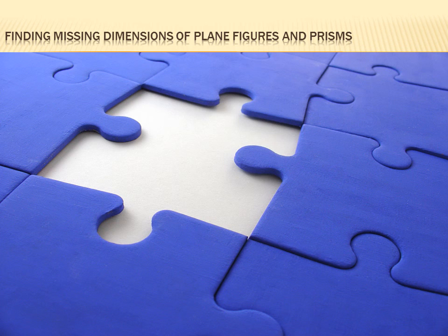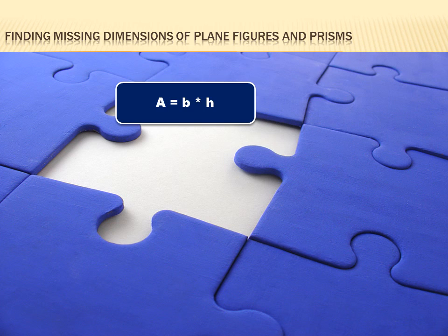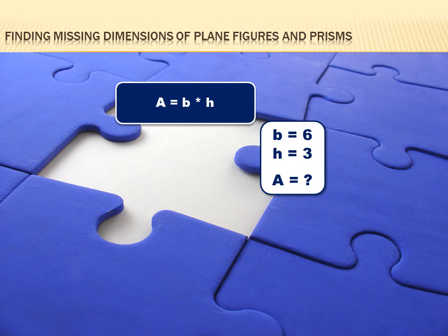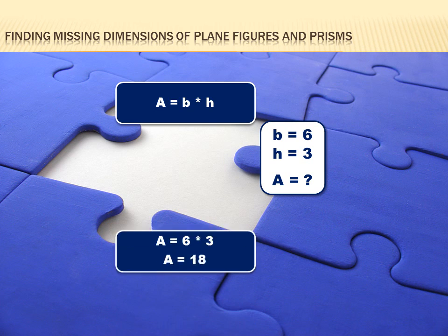First, let's learn the rules. You know this rule. If you were given an equation, area equals base times height, and then you were told that the base was six and the height was three, and you were asked to figure out what the area was, you wouldn't have any trouble.